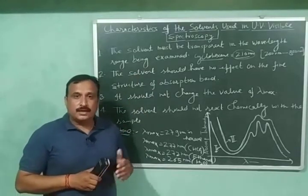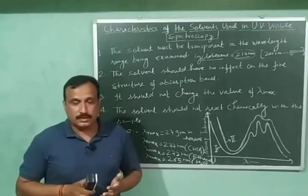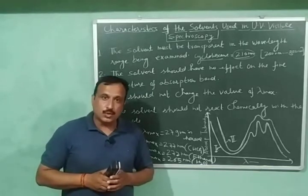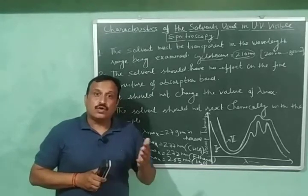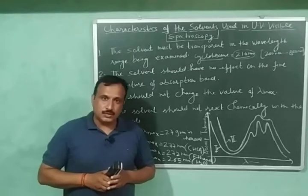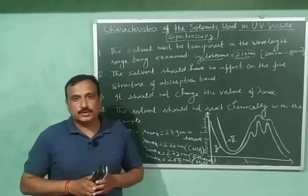And generally hexane, cyclohexane, isooctane, 95% ethanol, to some extent water, all these solvents are used in UV visible spectroscopy.